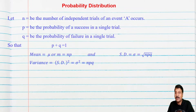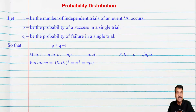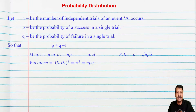The mean is denoted by mu or m and equals np. The standard deviation sigma equals the square root of npq. Variance equals sigma squared, which equals npq. So remember: n is the total number of trials, p is the probability of success, q is the probability of failure, p plus q equals 1, mean mu or m equals np, standard deviation sigma equals root npq, and variance equals npq.